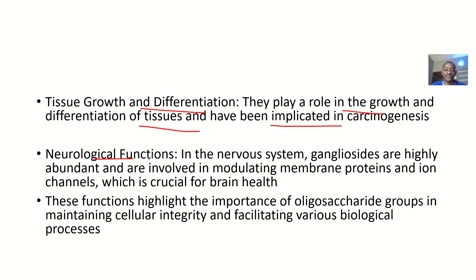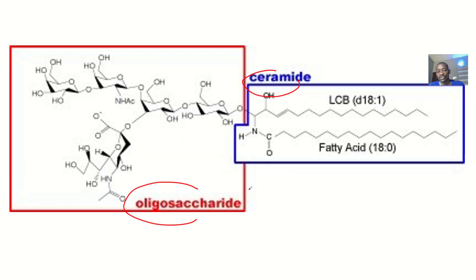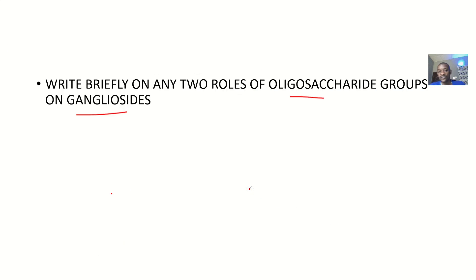Fifth, they also have neurological functions, meaning they have an effect on the nervous system. Gangliosides are highly abundant and are involved in modulating membrane proteins and ion channels, which is crucial for brain health. That's it for the roles of oligosaccharide groups on gangliosides.